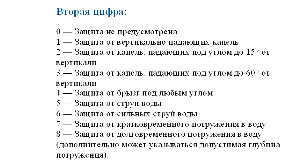The second digit indicates the degree of protection against moisture. Digits from 0 to 8 are used. The larger digit also indicates greater equipment protection. For example, 4 is protection against splashes from all angles, and 7 is protection against short-term immersion in water.